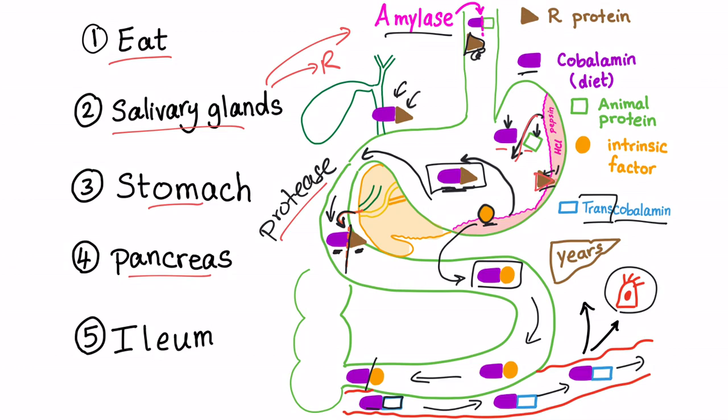Pancreas produces its secretion. Protease enzyme. It will divorce the vitamin B12 from the R protein and make it bind to the intrinsic factor. The ileum will absorb the transcobalamin and make it bind the transcobalamin so that it can go to the bloodstream. So any problem in any of these processes will cause vitamin B12 deficiency.